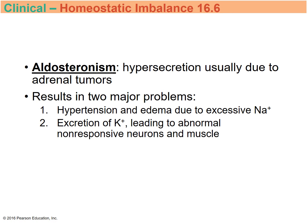Hypersecretion, known as aldosteronism, is usually due to a tumor on the adrenal cortex. Problems include hypertension, edema from excessive sodium retention, and excretion of too much potassium. Since potassium is involved in maintaining proper resting potential, excreting too much can lead to abnormal, non-responsive neurons and muscles.